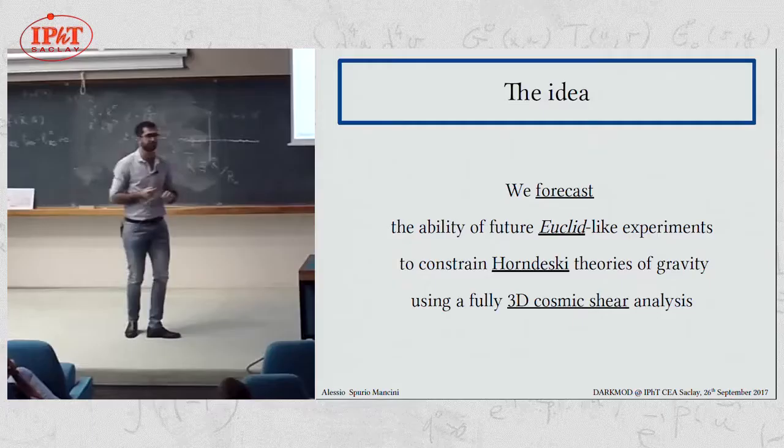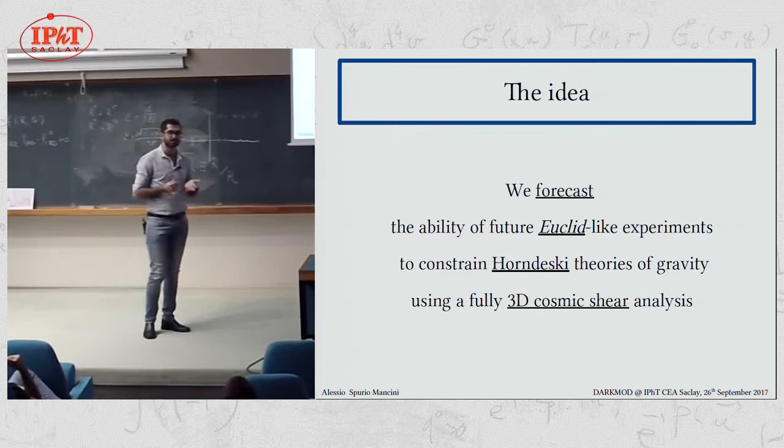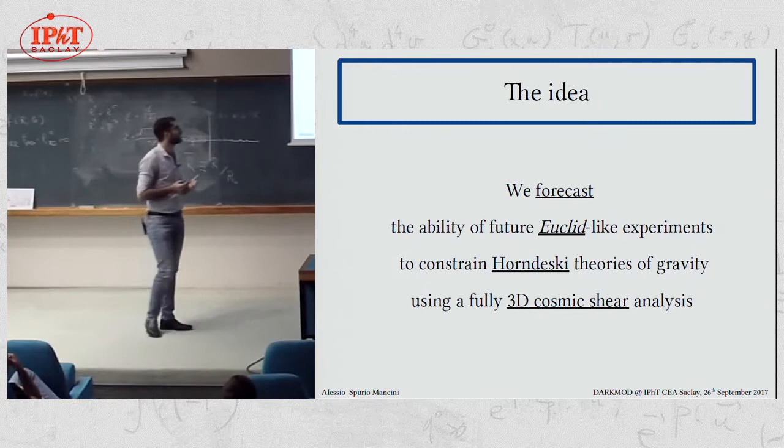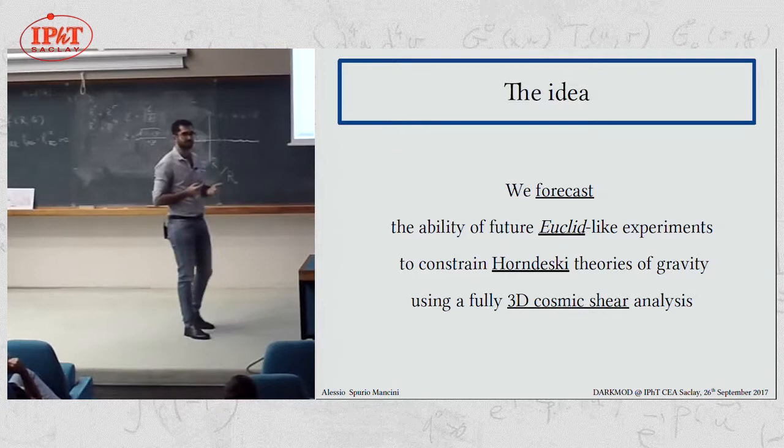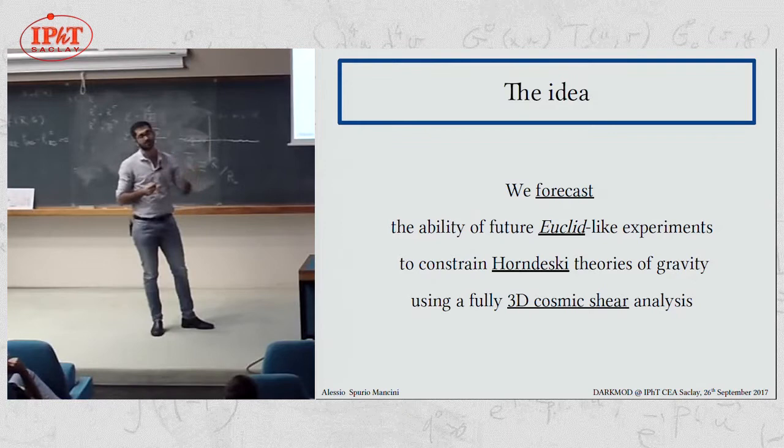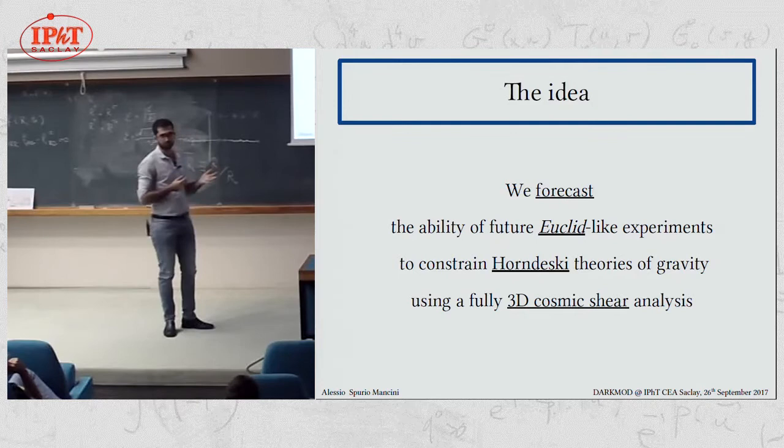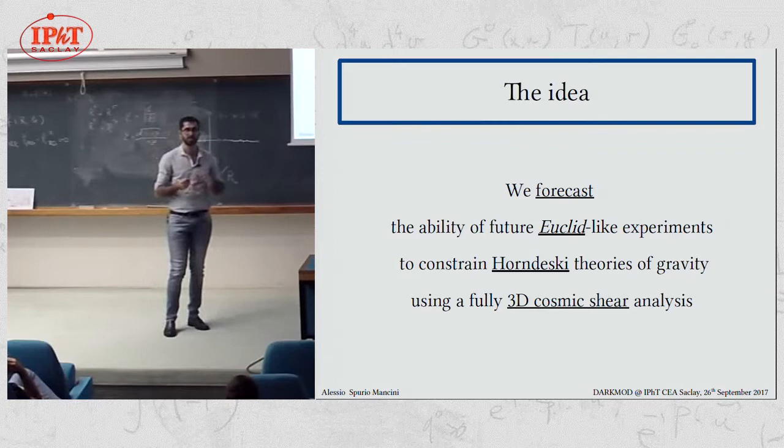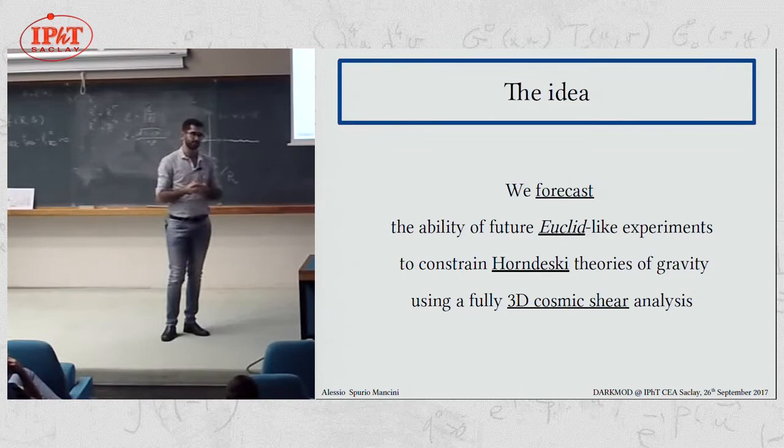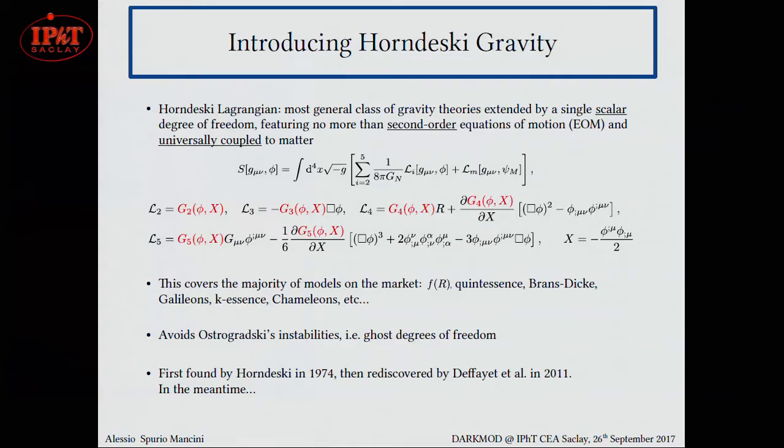First of all, I would like to give you the message, so the main idea of this project, which is to say if and how well Euclid would be able to say something about parameters that describe Horndeski theories of gravity, and doing this by using 3D cosmic shear analysis, which is a kind of analysis of weak lensing data that keeps information on redshift along the entire analysis. So you see here there are two main components. One is Horndeski theories of gravity, and the other one is 3D cosmic shear. So the rest of my talk will be about essentially explaining these two concepts a bit more in detail, and then join them towards the end of the talk and present you some results.